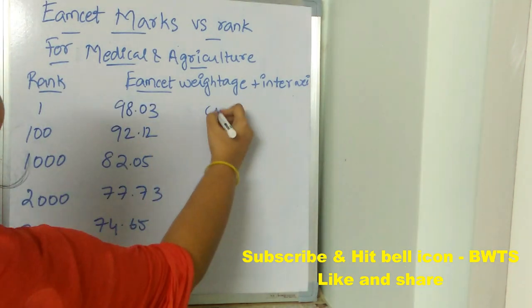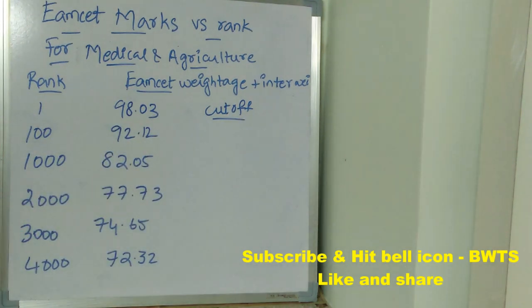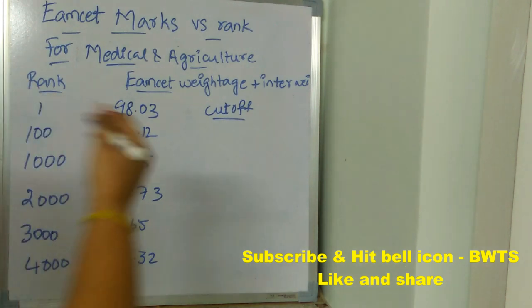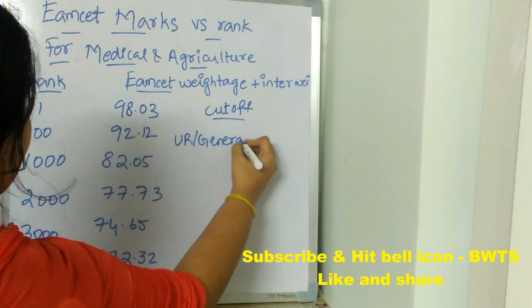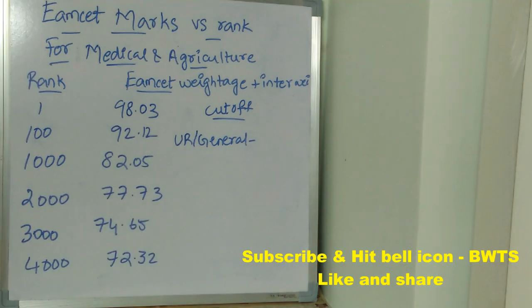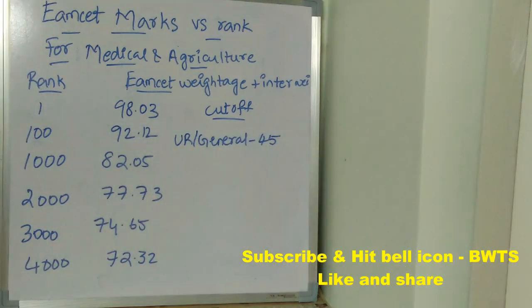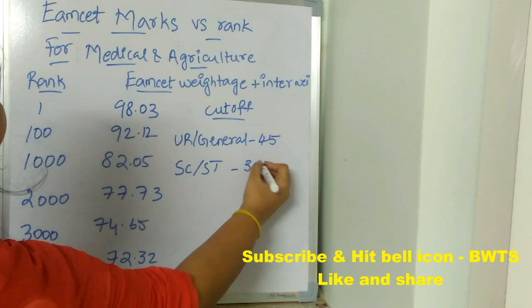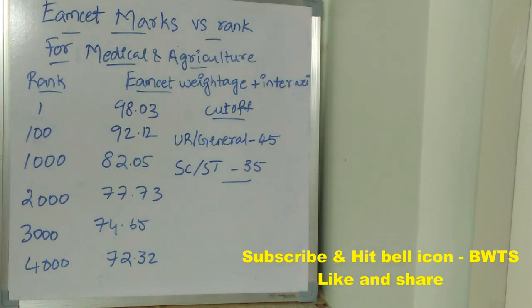Now let's see the expected cutoff category-wise for this year. For unreserved or general candidates, the cutoff is expected to be 45. For SC and ST candidates, the cutoff is expected to be 35.